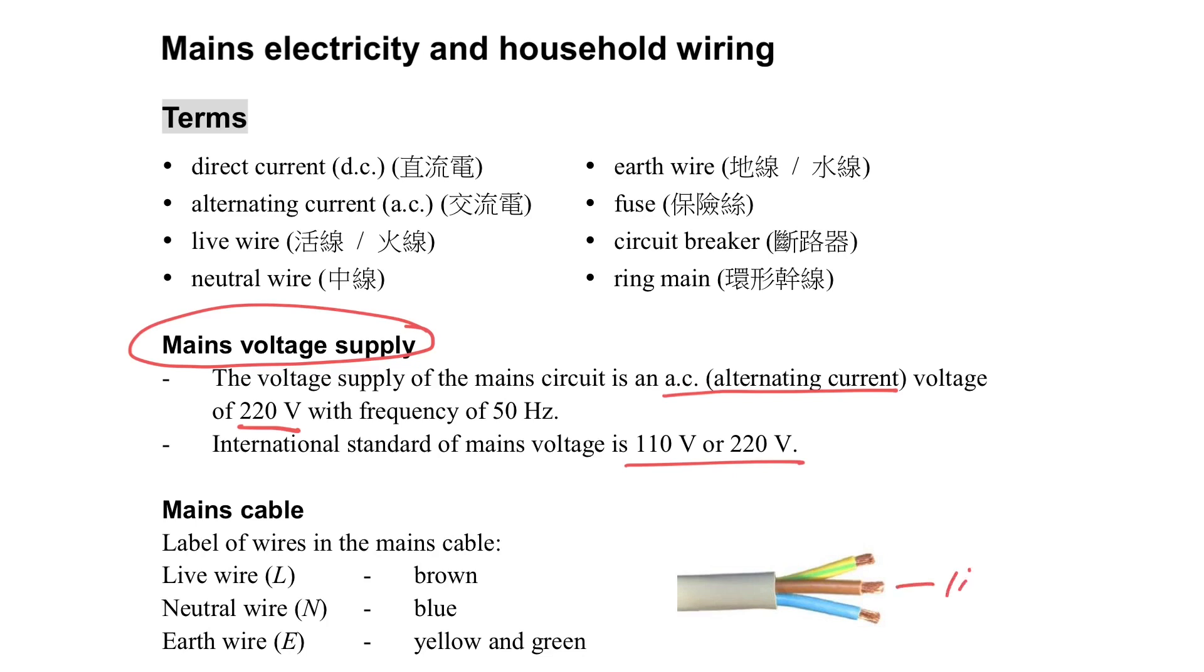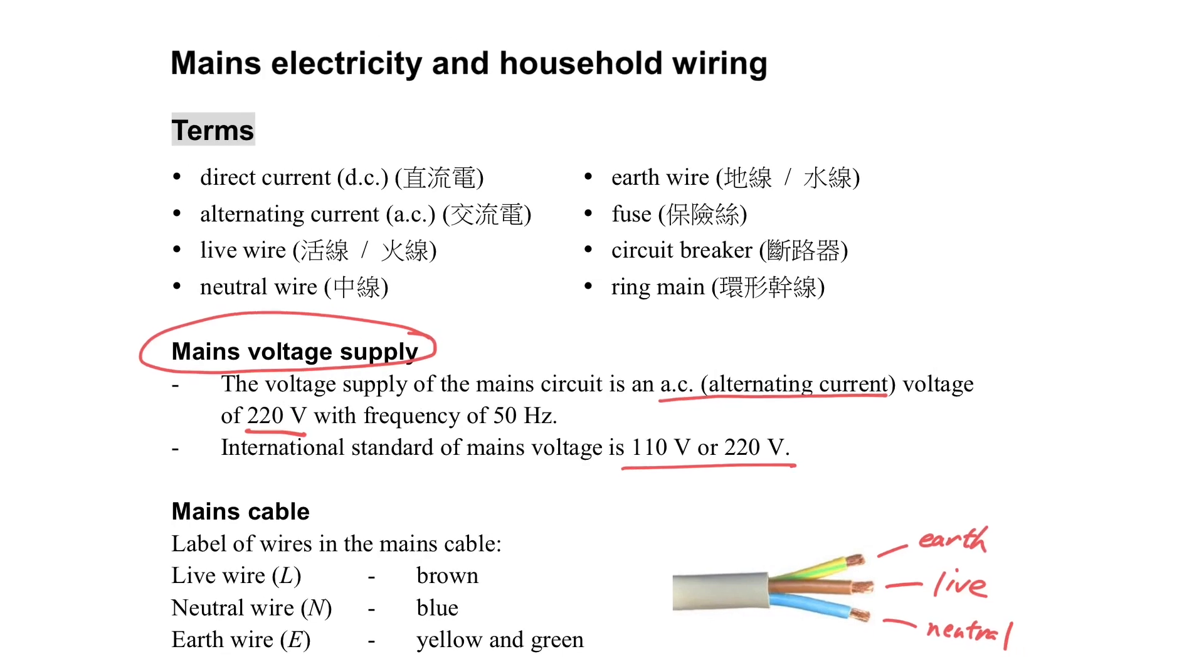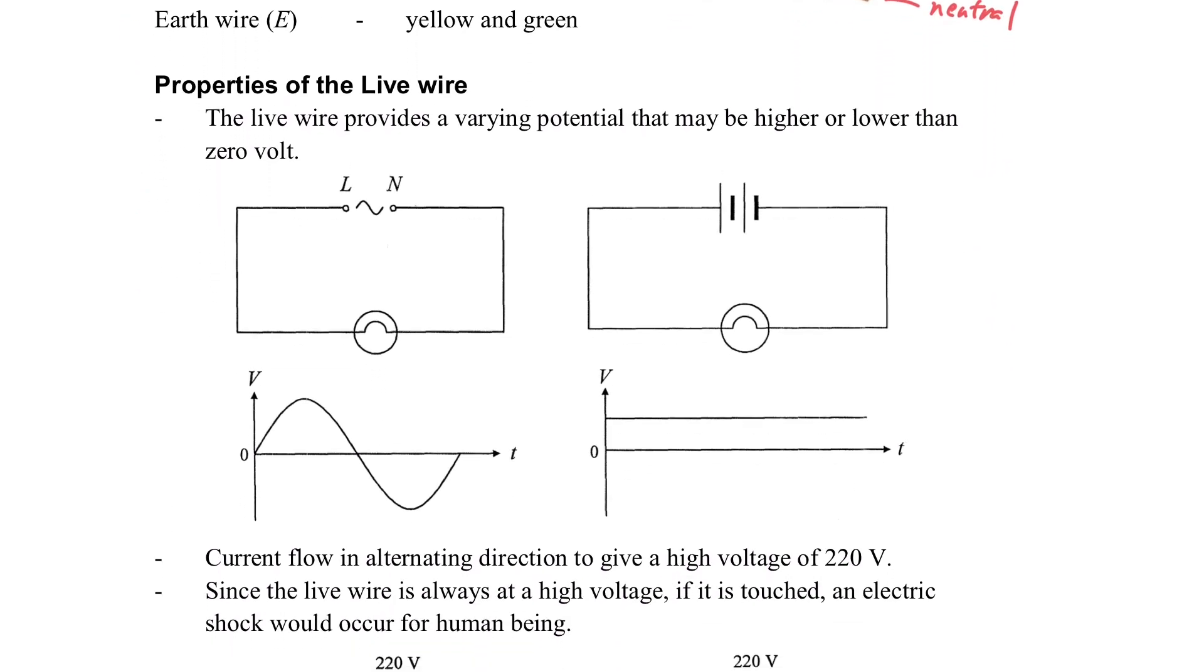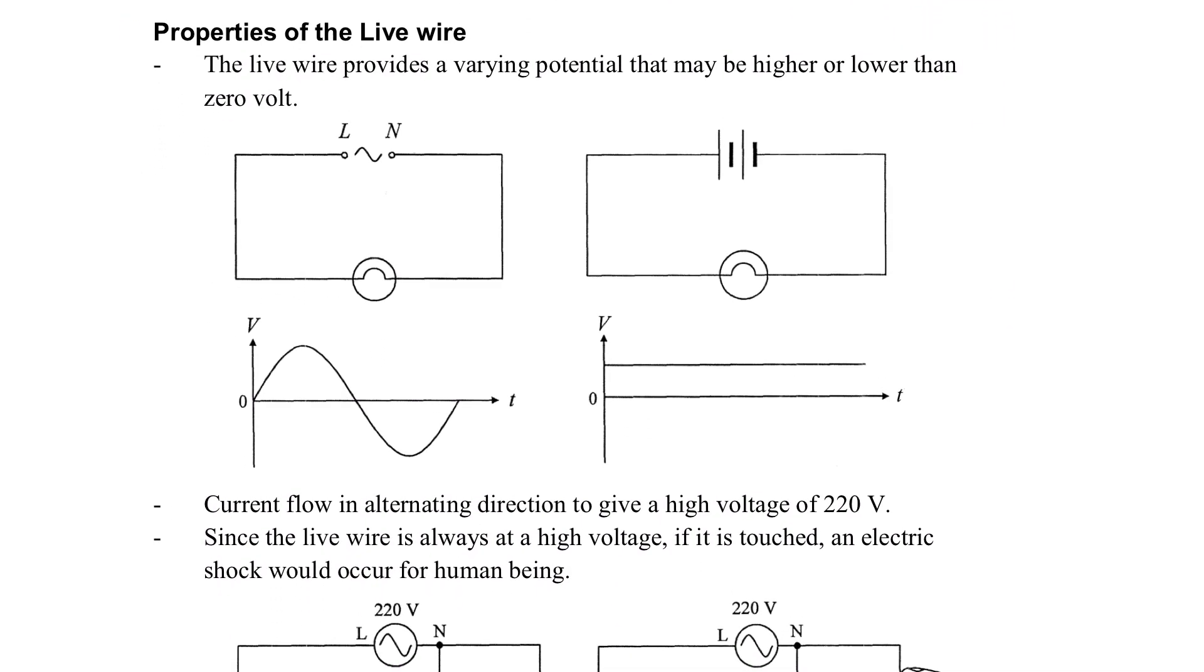What's important is the three wires. In the cable we have live wire in brown color, neutral wire in blue color, and earth wire with yellow and green color. We have to remember it. Let's see the function of each wire.